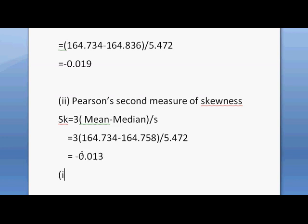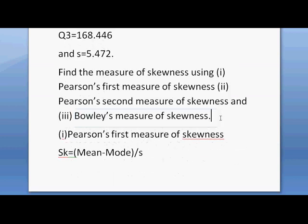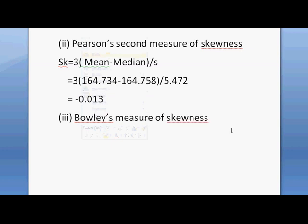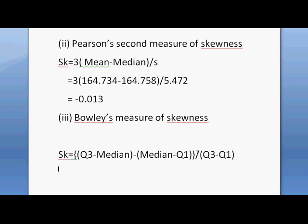And lastly, find Bowley's measure of skewness. Bowley's measure of skewness is given as: SK equals (Q3 minus median) minus (median minus Q1), the whole divided by Q3 minus Q1.